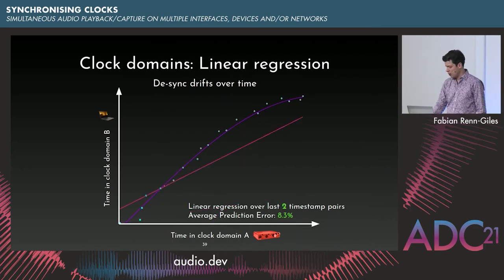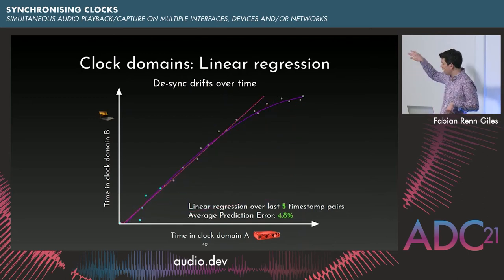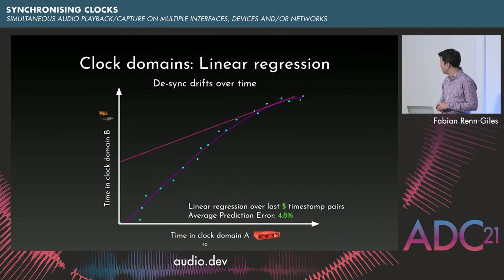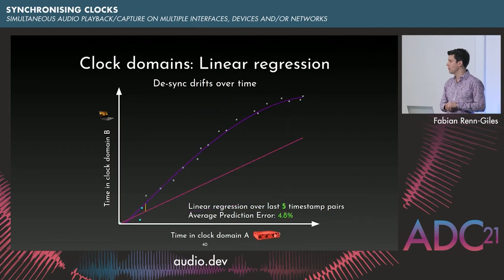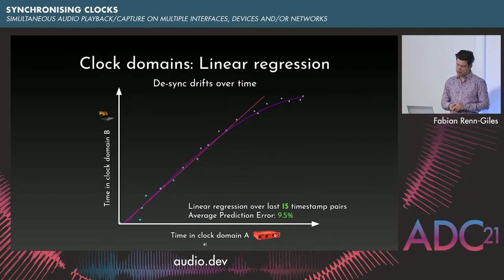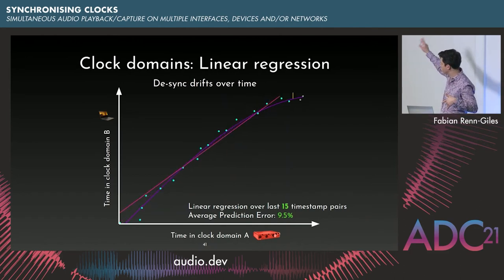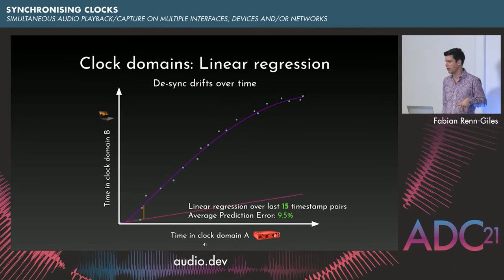You might try increasing the regression window to 15 samples. At the start, the pink line hugs the purple line very closely. But at the top of the curve, it's too slow to react to changes — the error goes outside the graph at the end, making the overall error the worst of all three. There's a trade-off: wider window reduces noise but slows tracking of clock drift.